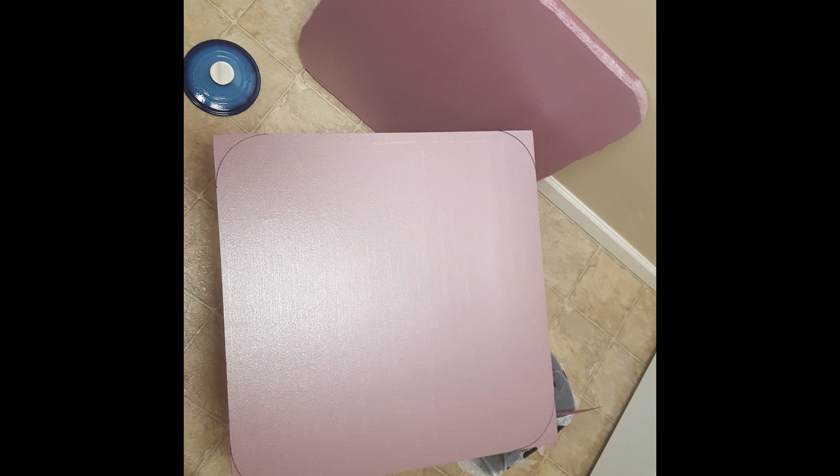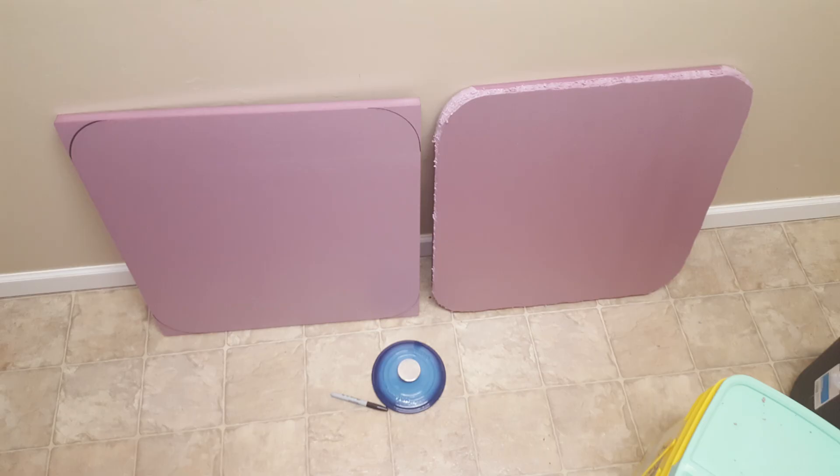So first thing you're going to want to do to build these panels is get you a 2x2 foam board. I got these from Home Depot. I used my fancy little pot lid there to kind of round off the corners and just used a serrated steak knife to slice off the edges and round things out a little bit.